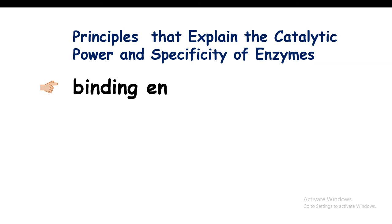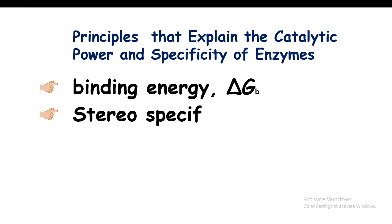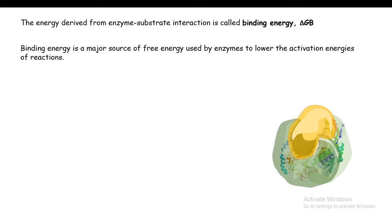There are two key principles. First, there is something called binding energy, which augments the enzyme-substrate interaction. Second, there is the stereospecificity of an enzyme, which arises from the 3D conformation of the enzyme's active site and the way it interacts with the substrate. Binding energy is the major source of energy used by the enzyme to lower the activation energy, and thereby augments the reaction rate.